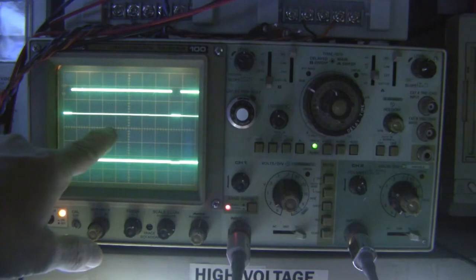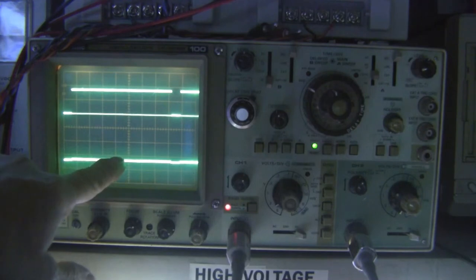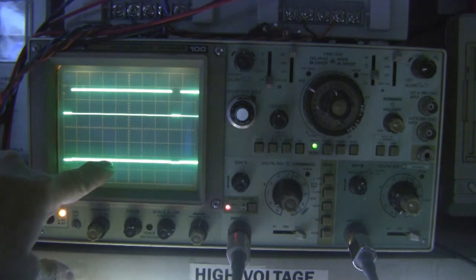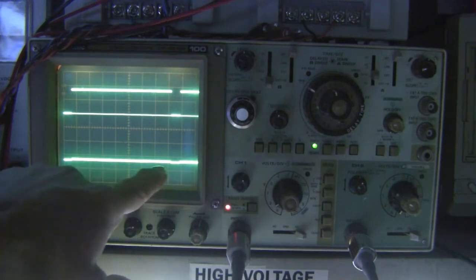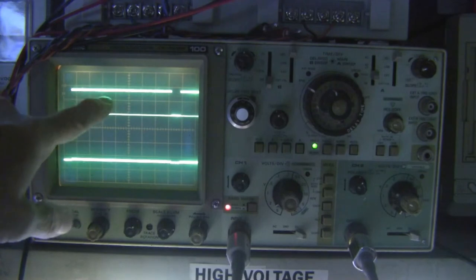Note that it is almost two divisions high at 20 volts per division. It is going from zero volts to 37 volts or so. The bottom trace has moved down from the center line down to over two divisions, which are 500 volts per division.